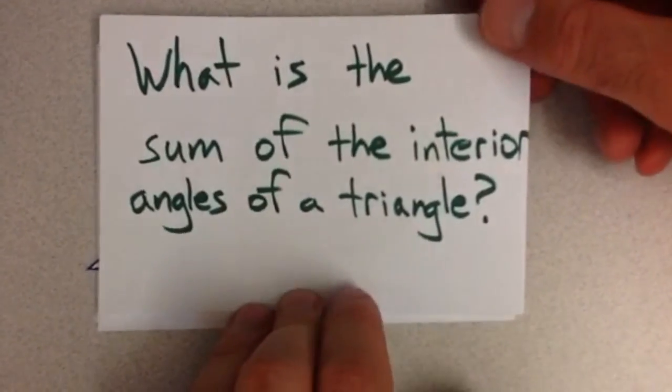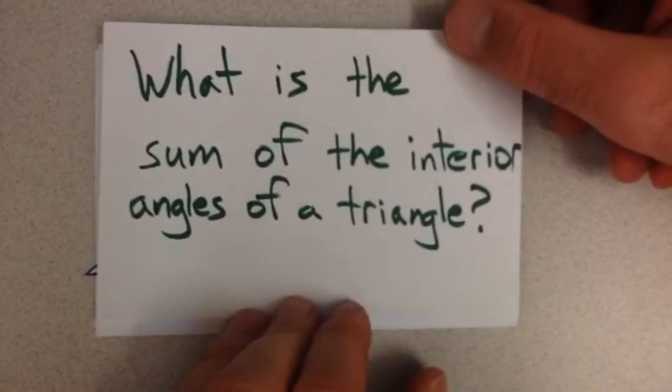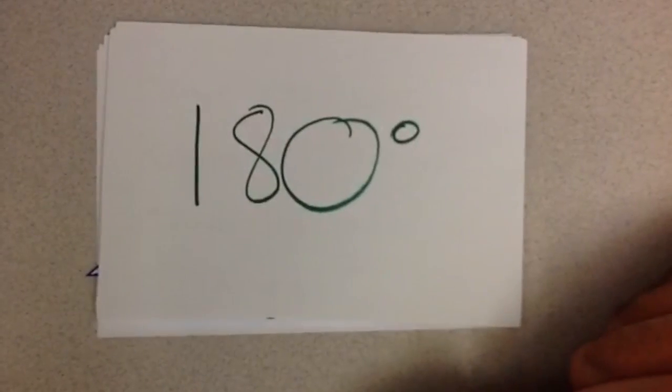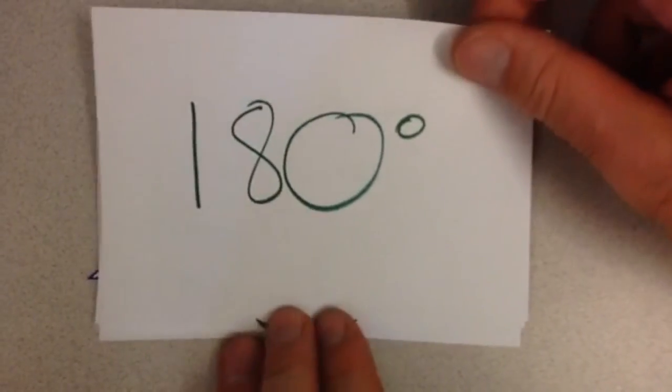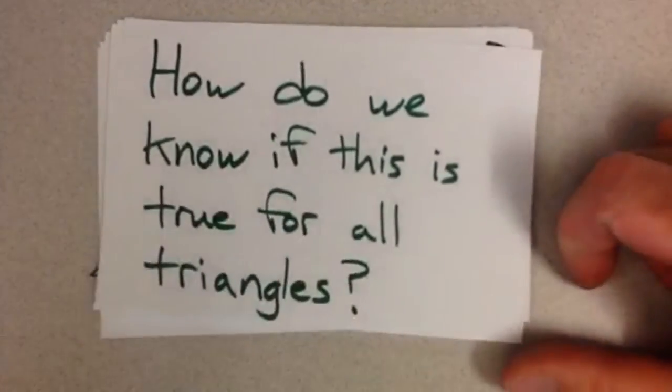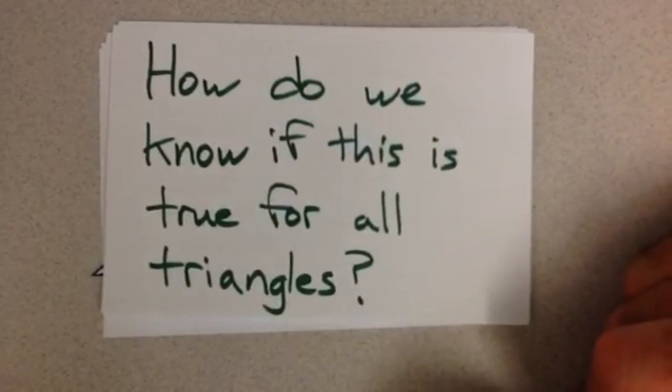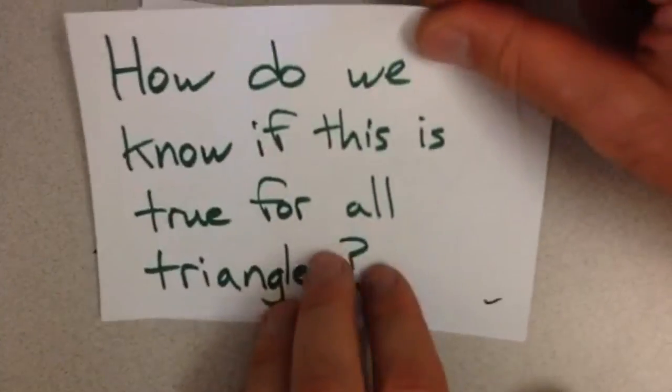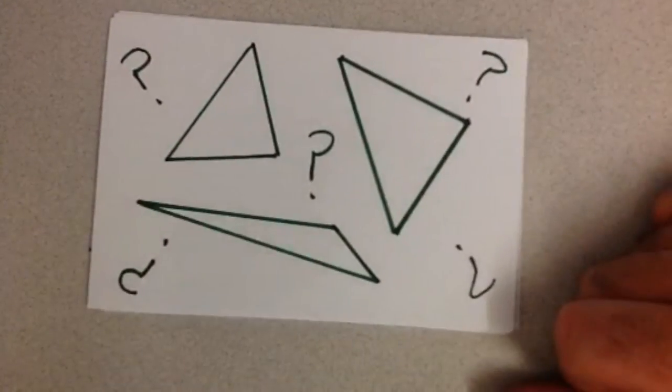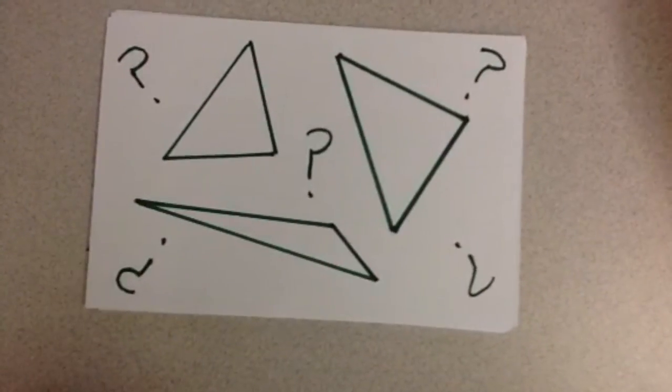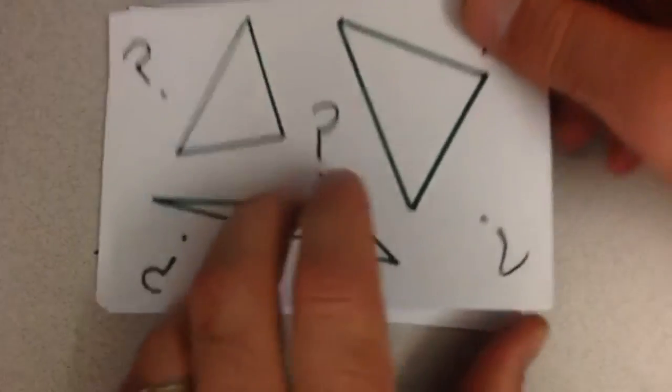So what is the sum of the interior angles of a triangle? 180 degrees, something that we already know. I knew this since elementary school, but how do we know if this is true for all triangles? We've got these different types of triangles - does it work for any triangle?